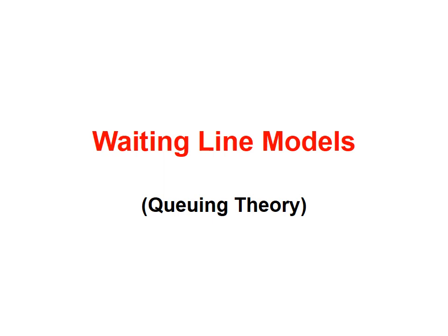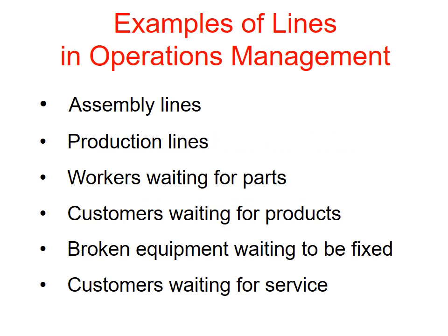Waiting line models, queuing theory. Examples of lines in operation management: assembly lines, production lines, workers waiting for parts, customers waiting for products, broken equipment waiting to be fixed, customers waiting for service.